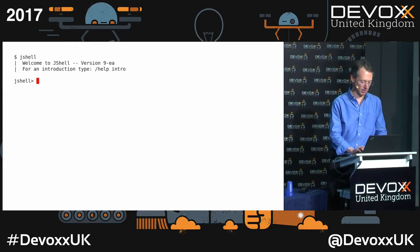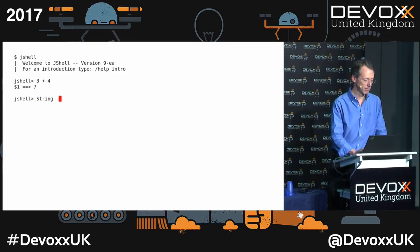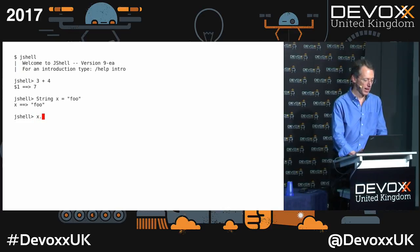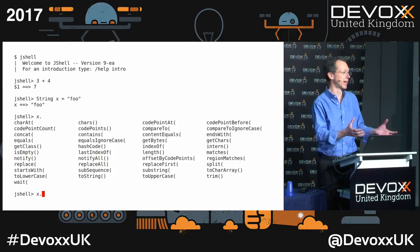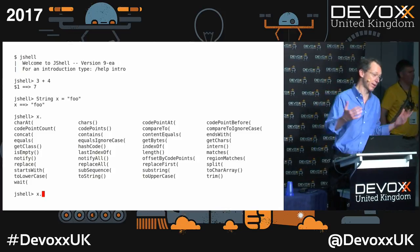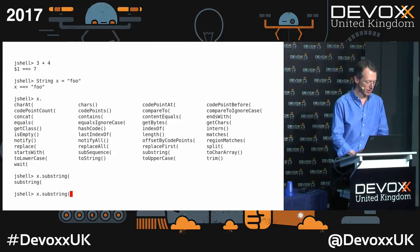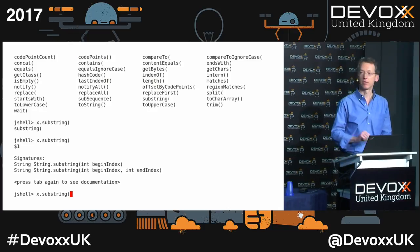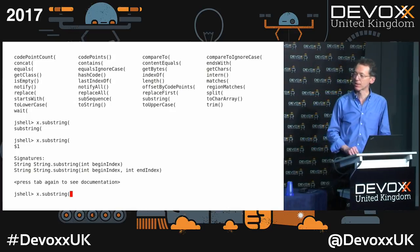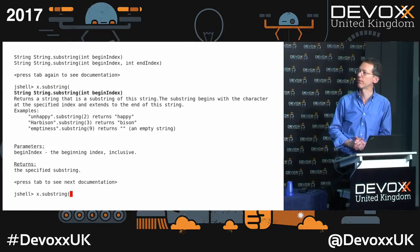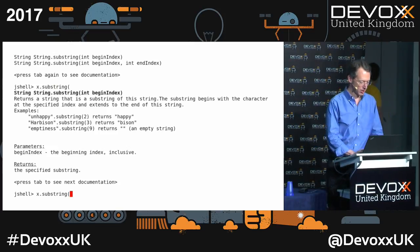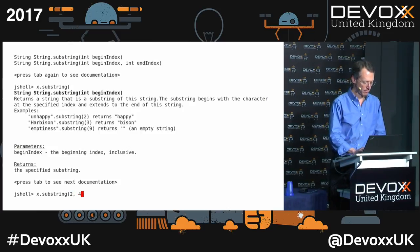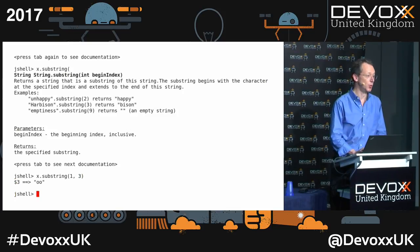So, JShell. Welcome to JShell. What can you do in JShell? You can type expressions — it does math. You can assign variables. You can ask it to do tab completion on a variable X. It's an instance of the String class, and it goes off to the String class and asks what methods are available. You can then do completion on methods — it tells you there are actually two overloads. Press tab again to see documentation, and it shows you a summary of the Javadoc right there in the tool.